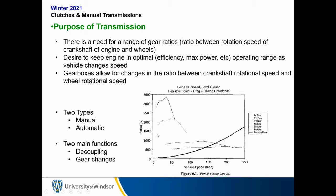Looking at force versus speed: in first gear we can get a lot of force but we can't go very fast. In second gear we have less force but we can go faster, and so on. At some point the resistive force matches the driving force and we can't accelerate anymore. So a gearbox allows for an optimal trade-off between the amount of force and the maximum speed based on the maximum engine RPM.